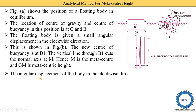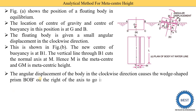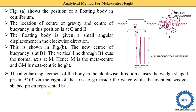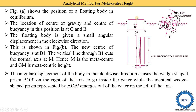The angular displacement of the body in a clockwise direction causes the wedge-shaped prism B-O-B' on the right of the axis to go inside the water. When we give a small angular displacement, on the right side of the axis, more area of the body is inside the water, and on the left side, the area of the body inside the water is reduced. Earlier, from A to B, this total area was submerged.